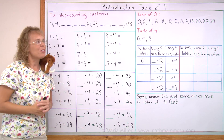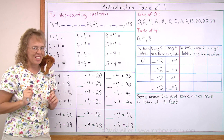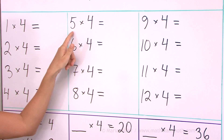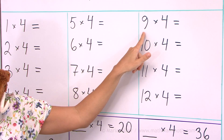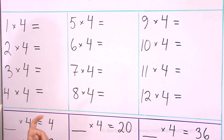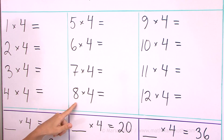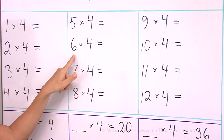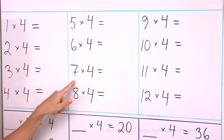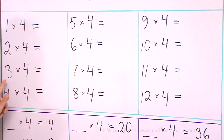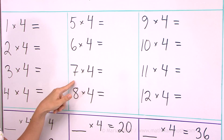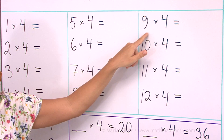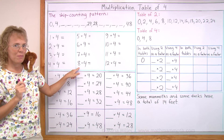Now we're going to drill the table of 4. I will point to the problems and you will try to say the answer as fast as you can. Ready? 5 times 4? — 20. 11 times 4? — 44. 9 times 4? — 36. 8 times 4? — 32. 6 times 4? — 24. 7 times 4? — 28. 3 times 4? — 12. 4 times 4? — 16. 7 times 4? — 28. 9 times 4? — 36. 8 times 4? — 32.